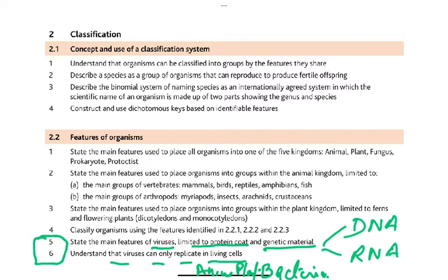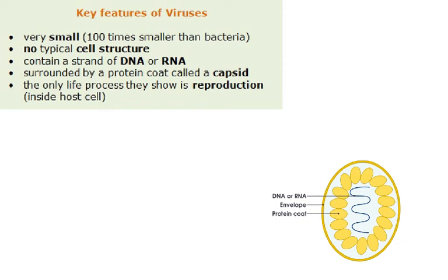Viruses only replicate in living cells — that is why they do not come under any biological classification, because they are not even considered living. The key features of viruses: they are very small, about 100 times smaller than a bacterium. So if a virus is 1 millimeter, the bacterium would be 100 millimeters.